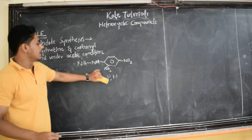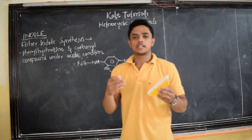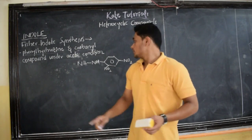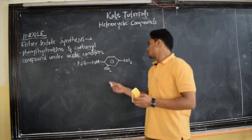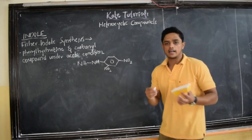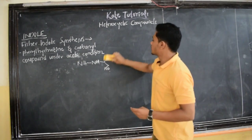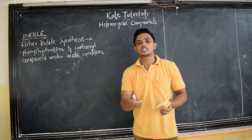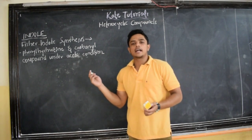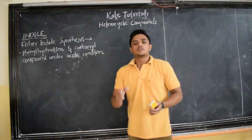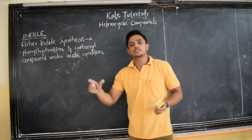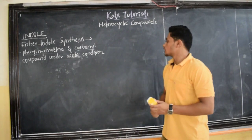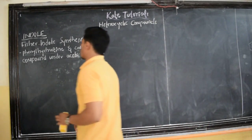The 2,4-DNPH test is the main test to distinguish whether a given compound is a carbonyl compound or not. Only carbonyl compounds give the 2,4-dinitrophenyl hydrazine test; no other compounds give this reaction. The 2,4-DNPH reagent is orange in color, and when a carbonyl compound reacts with it, the hydrazone product formed is also orange — indicating the presence of a carbonyl compound.